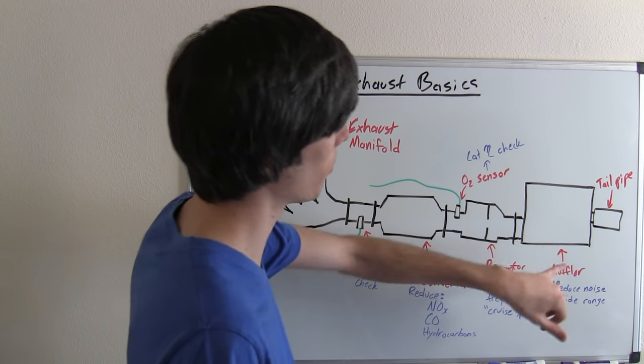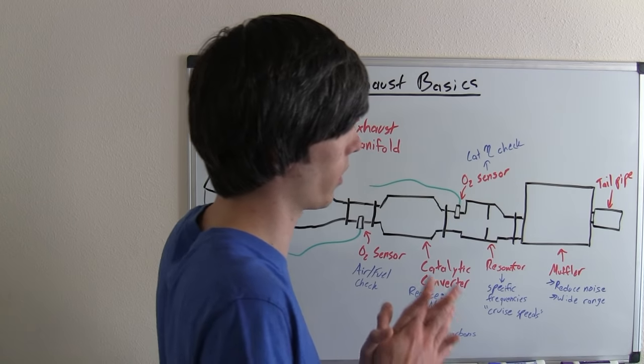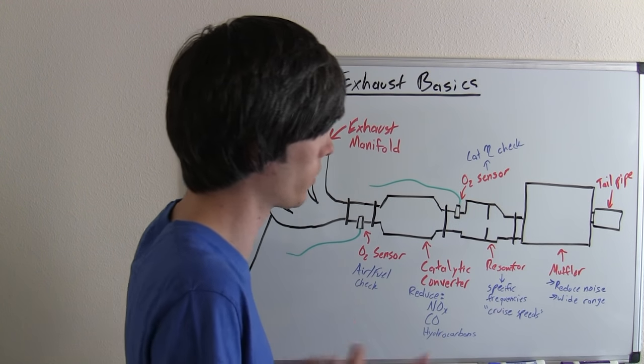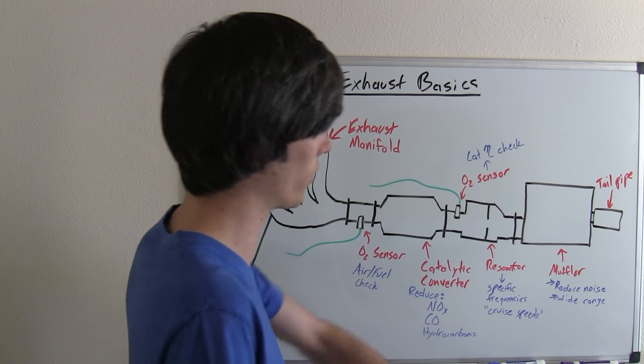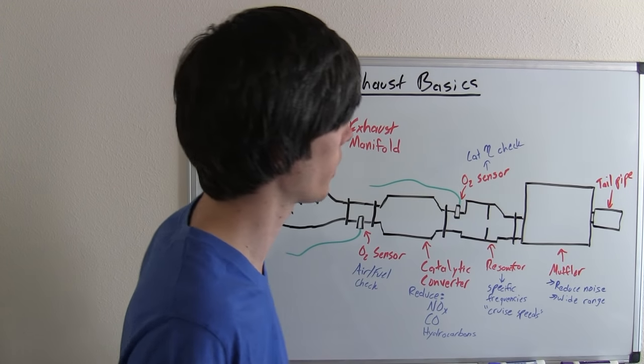Finally, we've got our muffler. This just reduces noise across the board, reduces pretty much all frequencies, makes it a little quieter so your car's not so loud, and then it all goes out the tailpipe.